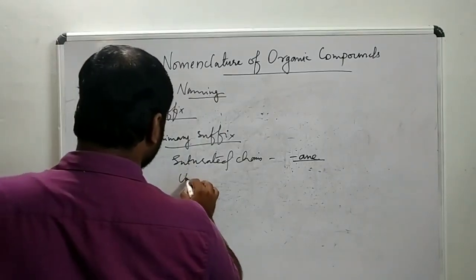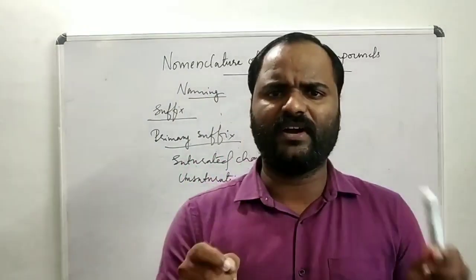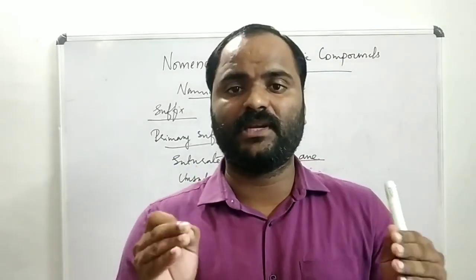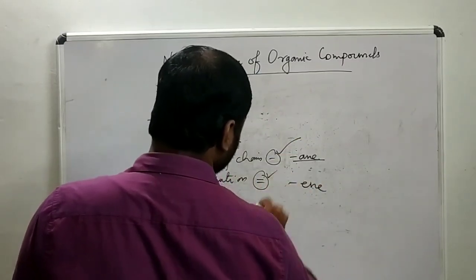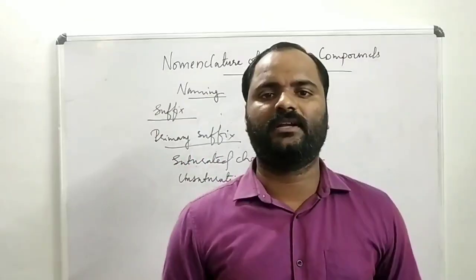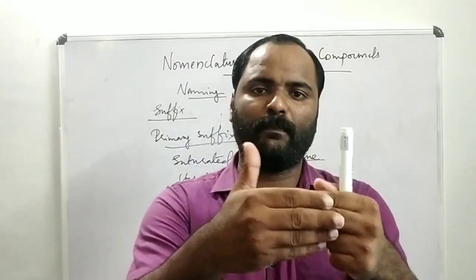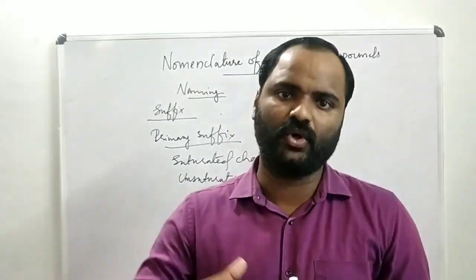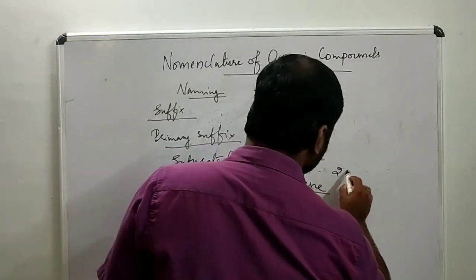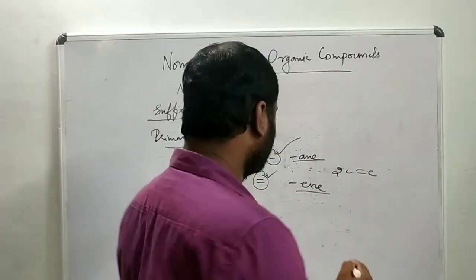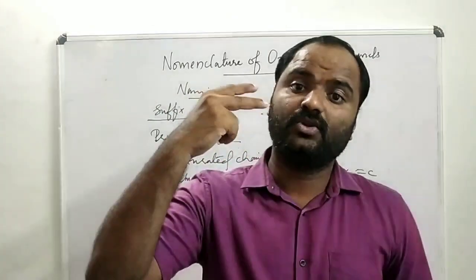For unsaturation — meaning double and triple bonds — in the case of unsaturated compounds, we have doubly bonded or triply bonded carbon atoms. In the case of a double bond, we use the suffix ENE. Alkenes are double-bonded unsaturated compounds. Along with the word root we use the ENE suffix, giving ethene, propene, butene, pentene, and so on. If there are two double bonds, we use DIENE — diene means two double bonds.